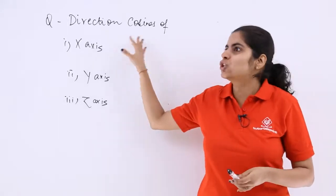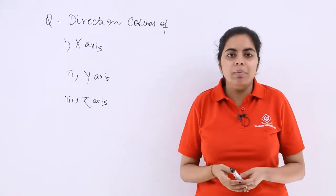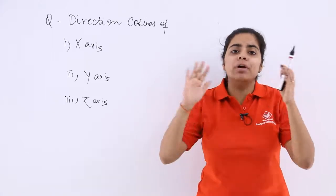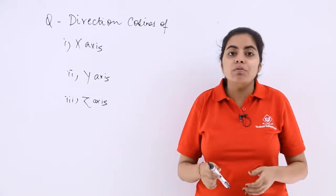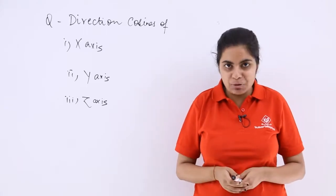Now everybody knows direction cosines definition, but what happens is that in very lengthy questions when some tricky small concepts come, we often get confused even with those minute concepts.